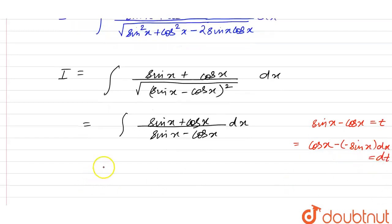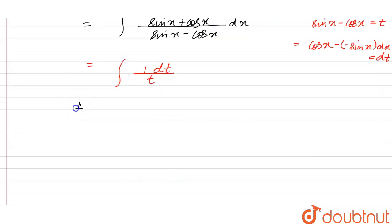So we can write this whole term as integral of we have dt and 1 upon we have t here. So I is equal to, if we integrate this we have modulus of ln modulus of t plus c.